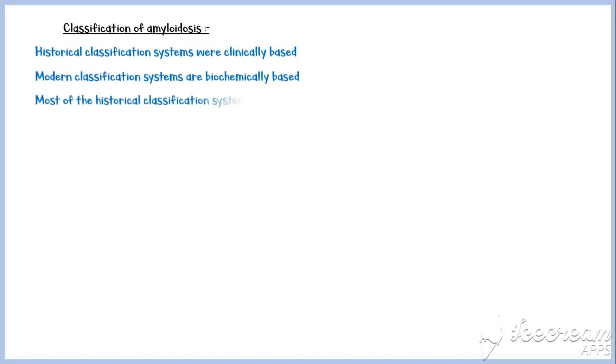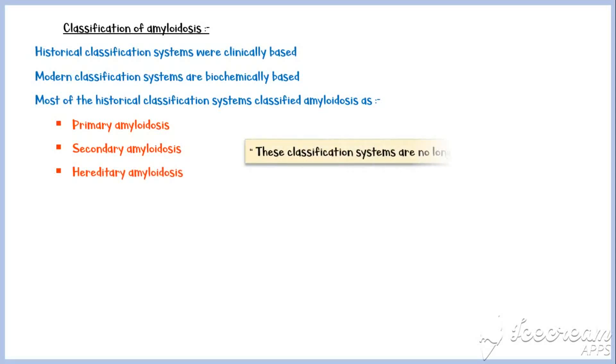Most of the historical classification systems classified amyloidosis as primary, secondary, and hereditary amyloidosis. However, these classification systems are no longer being used. So, let's discuss about the modern classification system in more detail.